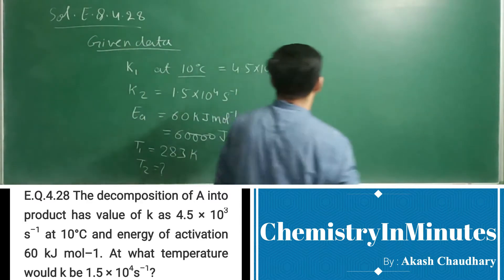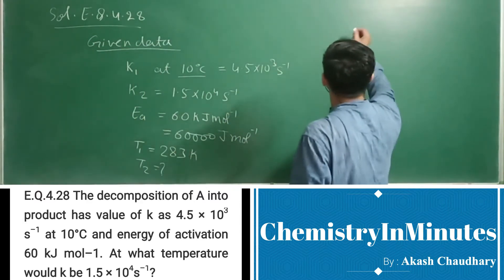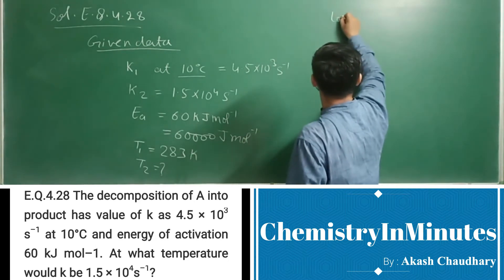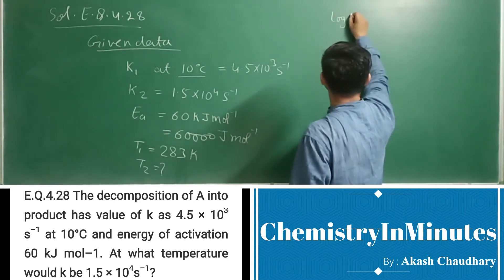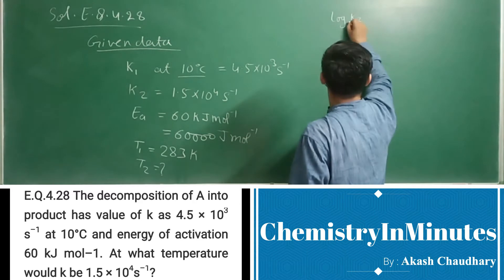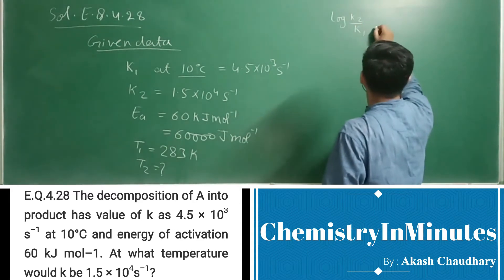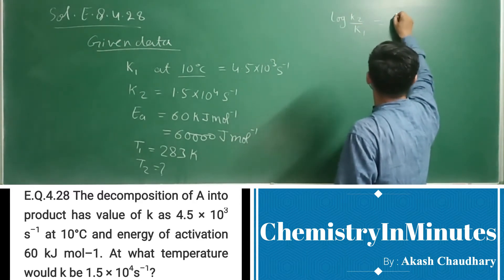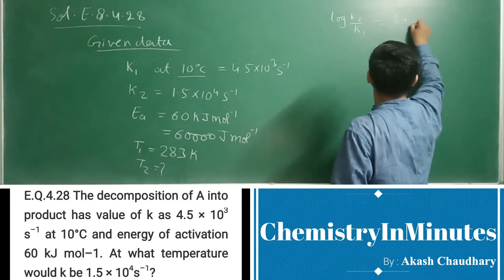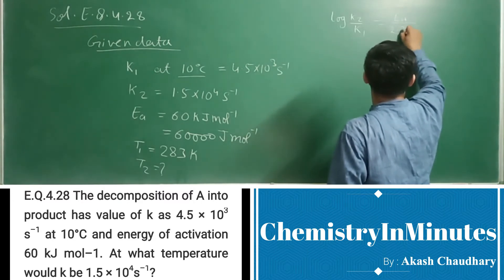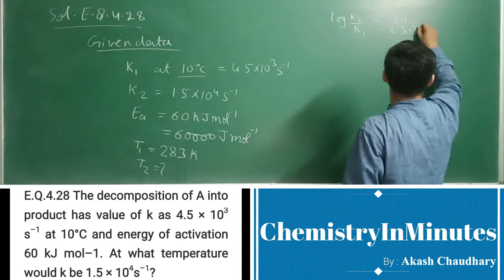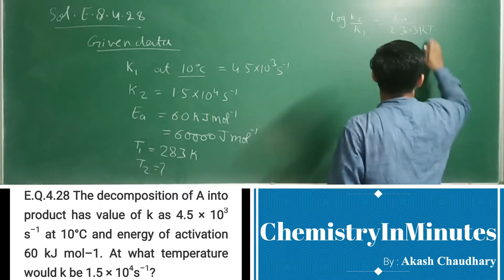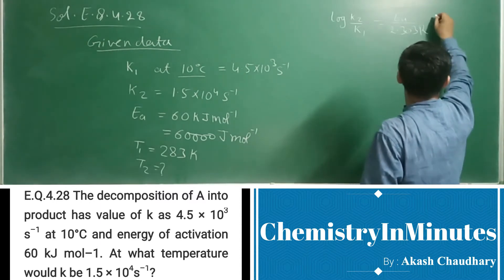Now, the relation: log(K2/K1) equals Ea/(2.303R) times (1/T1 - 1/T2).